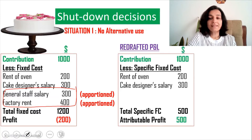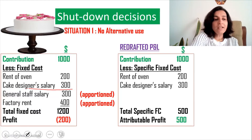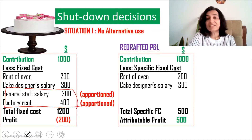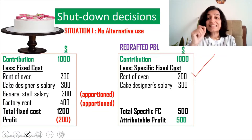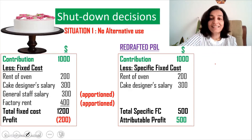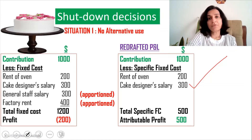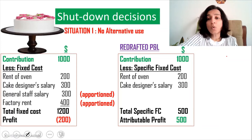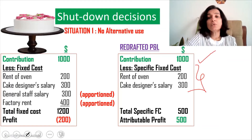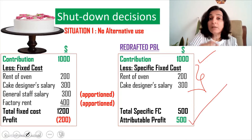The redrafted P&L account will appear like this. The two items deleted are the general staff salary and the factory rent. The rent of the oven is included because it is a specific fixed cost — the oven is exclusively used for making cakes. The cake designer's salary of $300 is also included as a specific fixed cost, not a general one. Whenever redrafting the P&L, only specific fixed costs are deducted from contribution, and the resulting figure is the attributable profit.